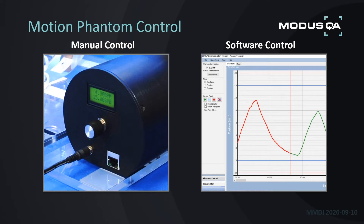Now I'd like to discuss the way these Phantoms are controlled. The PBrest family of Phantoms have the same motor and controller, and with that you have the ability to control the Phantom from the motor itself, so it doesn't need to be connected to software. With the knob on the left side of your screen, you can put it into two different modes — positional or rotational — and there's also a mechanical way to adjust the amplitude.